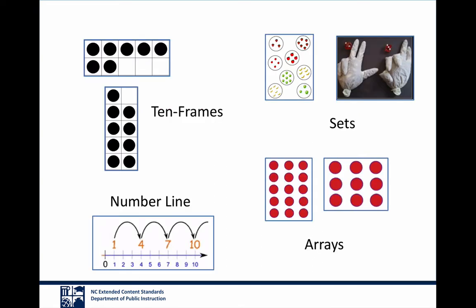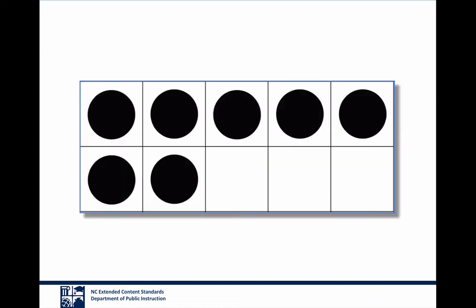Repetition with variety is one key to ensuring that students with significant cognitive disabilities learn in ways that lead to the application of knowledge and skills in mathematics. Let's consider what repetition with variety might look like in math. Throughout the standards, students are expected to learn to recognize and use a variety of models such as 10 frames, sets, number lines, and arrays. Let's use one of these, the 10 frame, as an example of repetition with variety to promote student thinking.